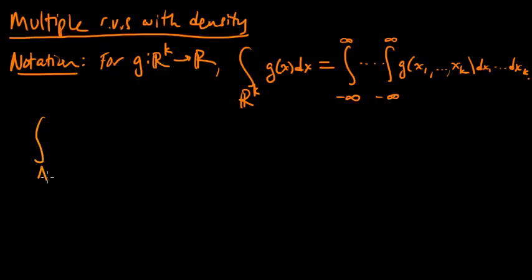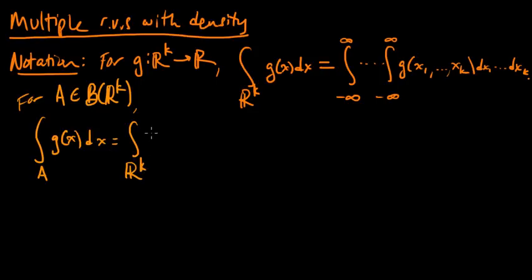And another notation which is very useful for Lebesgue integration: for some set A, some Borel measurable set A, so this is for A in the Borel sigma algebra on R^k, that's the sigma algebra generated by the open sets in R^k. We're going to denote by this the integral over all of R^k of the indicator function of that set A evaluated at x times the function. So this is using this notation here, but now g of x has become this new function, and what the indicator does is it zeros out g of x everywhere except for A, so that this becomes an integral over this set A.